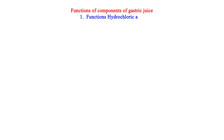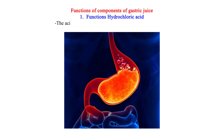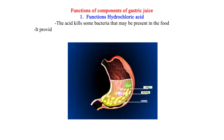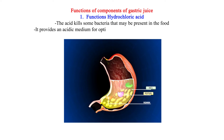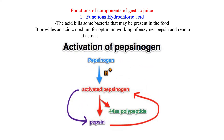Functions of components of gastric juice. 1. Functions of hydrochloric acid: the acid kills some bacteria that may be present in the food; it provides an acidic medium for optimum working of enzymes pepsin and renin; it activates pepsinogen to pepsin.